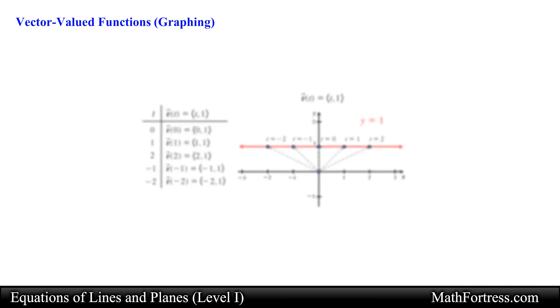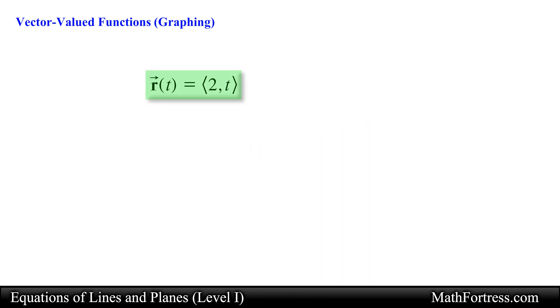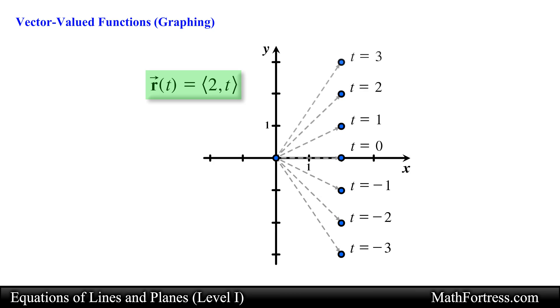In a similar fashion, we can describe the equation of a vertical line by using the following vector function. This vector function will generate various position vectors that start at the origin and end at points that lie on the line x equals 2. You can imagine the graph of a vector function as being sketched by a position vector that starts at the origin and moves along the curve as the value of t increases, plotting points that lie on the curve along the way.